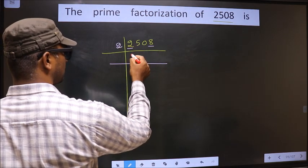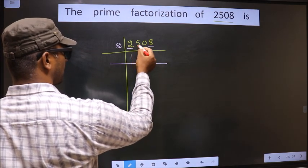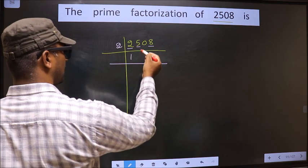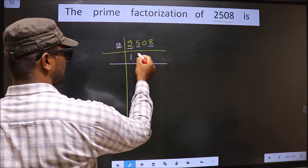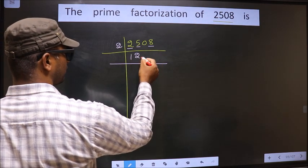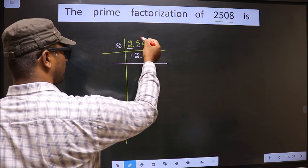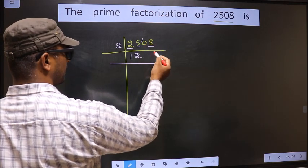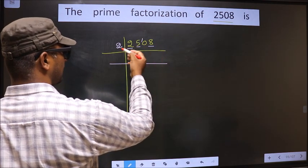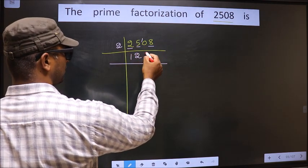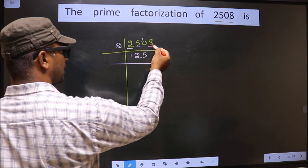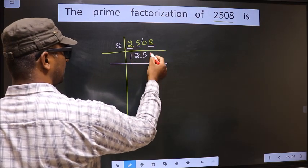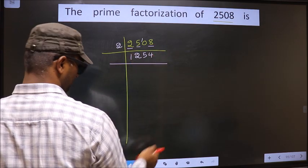When do we get 2 in the 2 table? 2 times 1 is 2. The other number is 5; a number close to 5 in the 2 table is 2 times 2 is 4. 5 minus 4 is 1; carry it forward making it 10. When do we get 10 in the 2 table? 2 times 5 is 10. The other number is 8; when do we get 8 in the 2 table? 2 times 4 is 8.